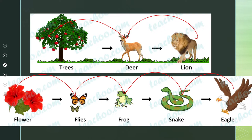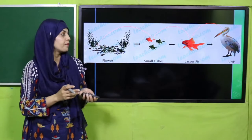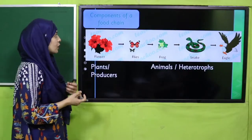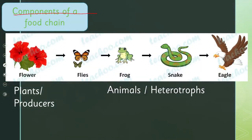You can also see the chain: flower → flies → frog → snake → eagle, where energy is transferred from plant onwards because one organism is eating the other. Energy is also transferred from flower to fish, then to a larger fish, and then a bigger bird eats the fish. That is how energy transfers from organism to organism in an ecosystem. In a food chain, plants are the producers — for example, a hibiscus flower is a producer.